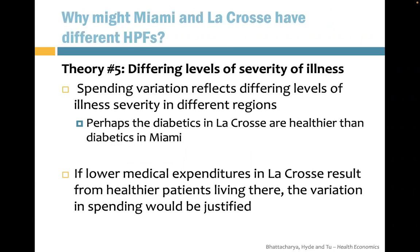Theory five is different rates of illness severity. Spending variation may reflect differing levels of illness severity in different regions. Perhaps diabetics in La Crosse are healthier than diabetics in Miami, so Miami diabetics need to spend more money to achieve the same health level. If lower medical expenditure in La Crosse results from healthier patients living there, the variation in spending could be justified. However, researchers don't think this is a major source of the observed variation.